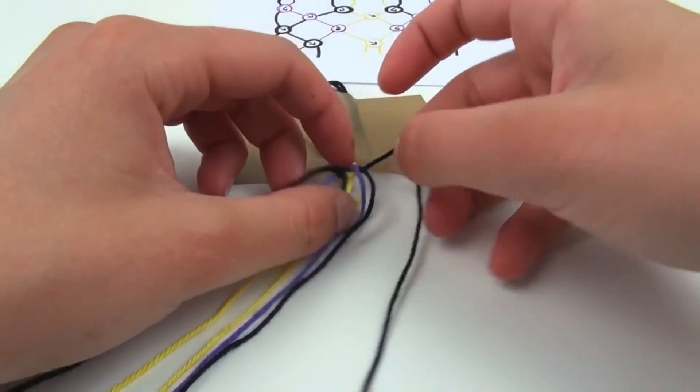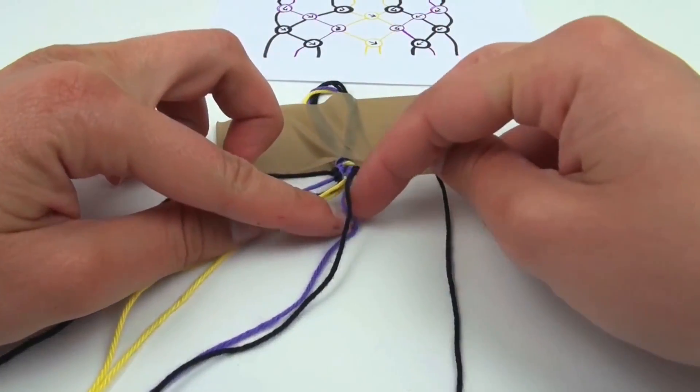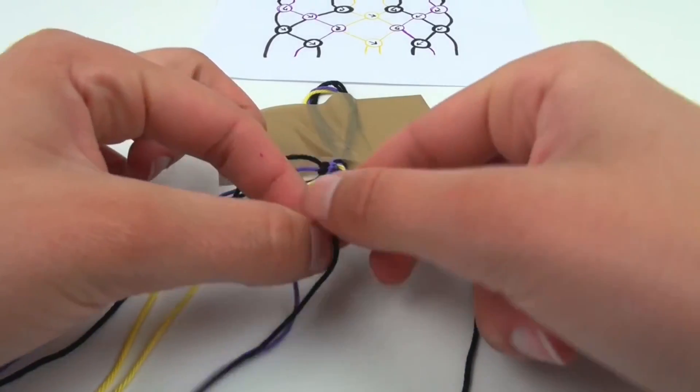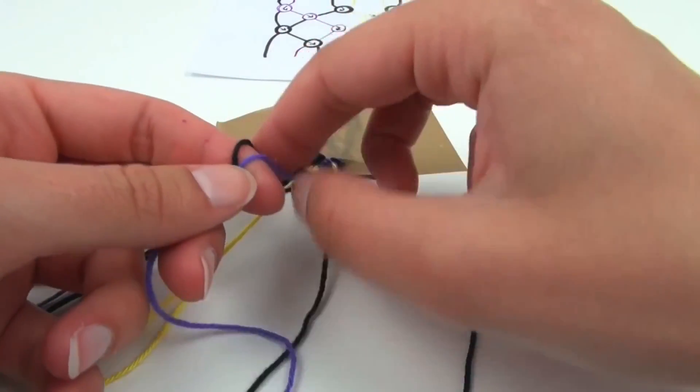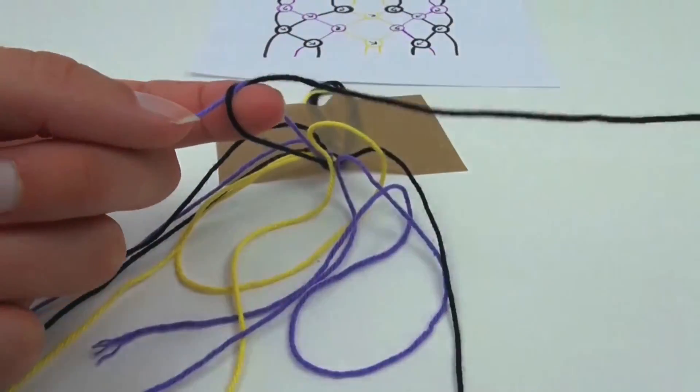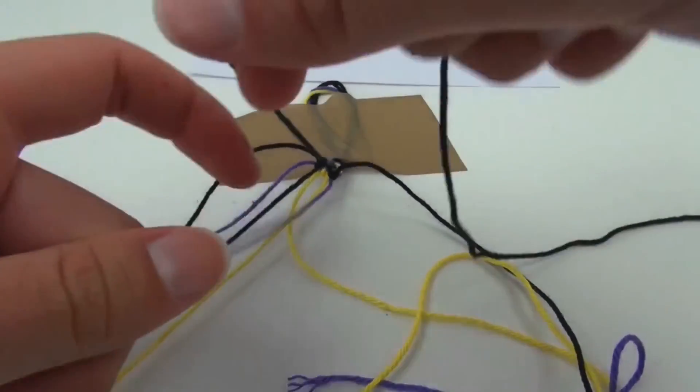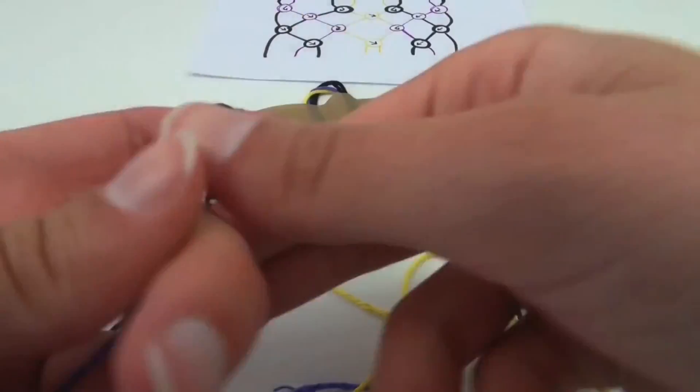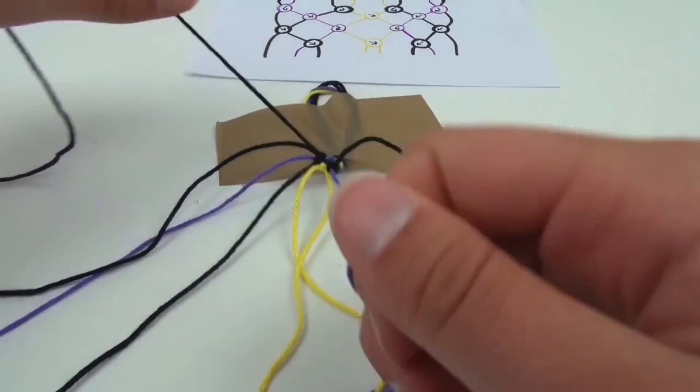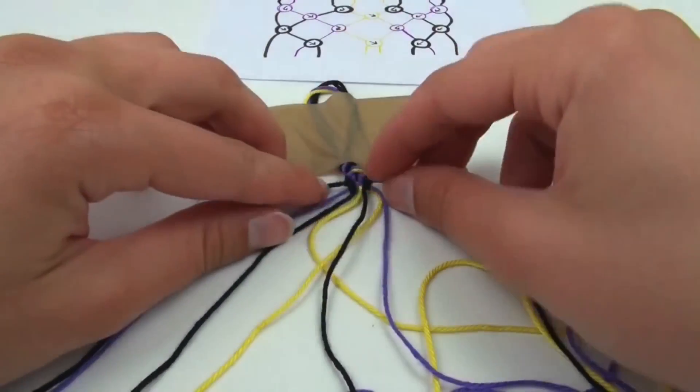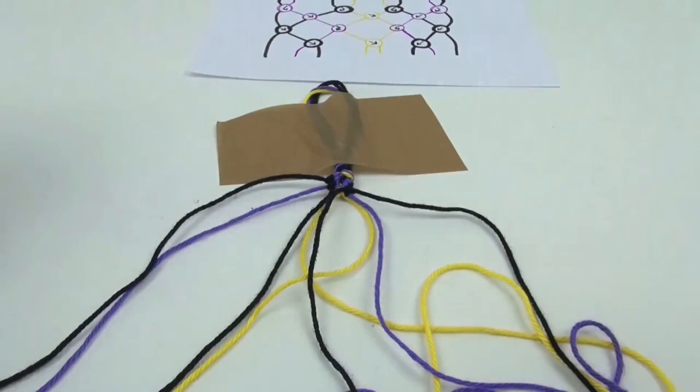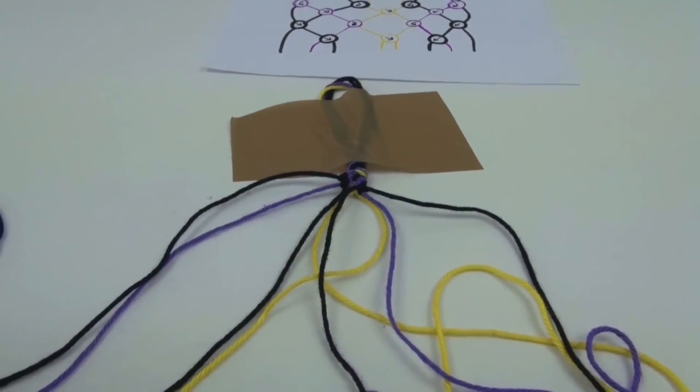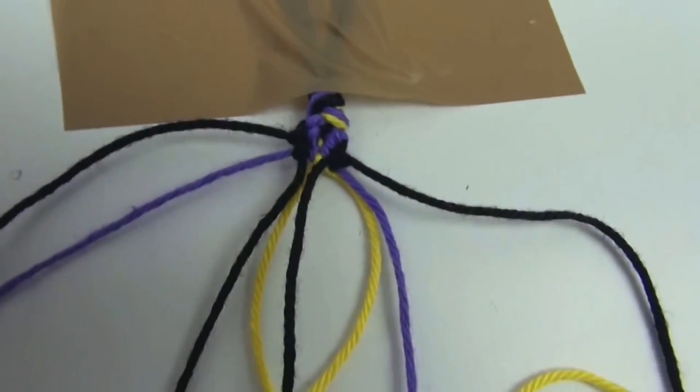Then a purple with black, the inner black one with the purple one, the black over the purple one. That's our first round done.